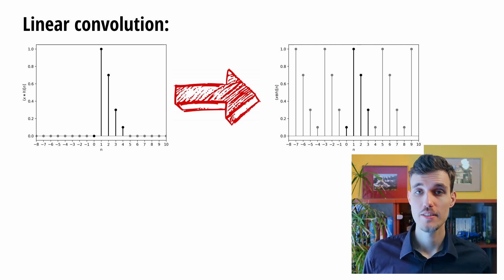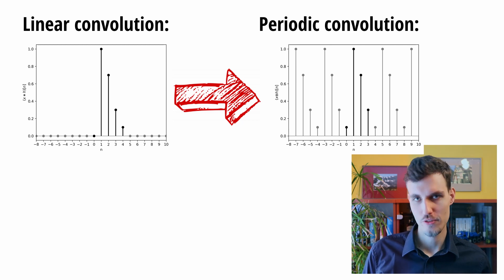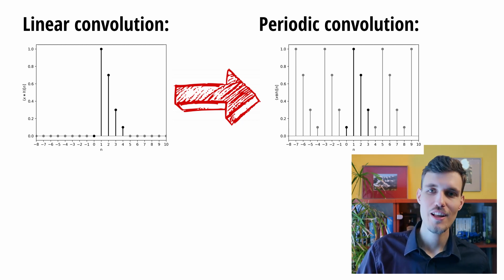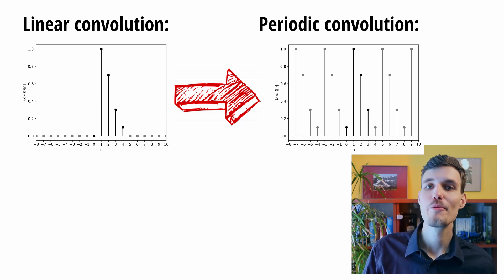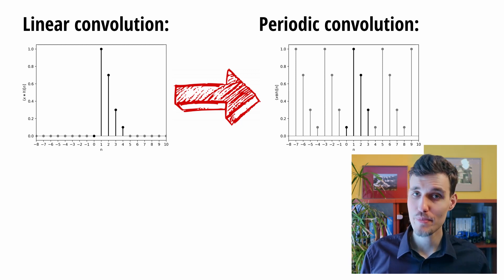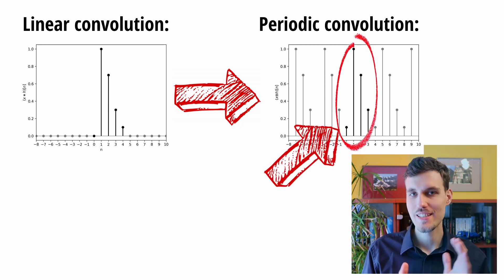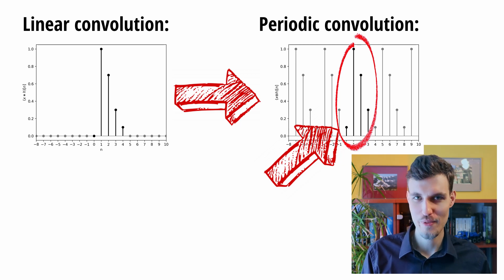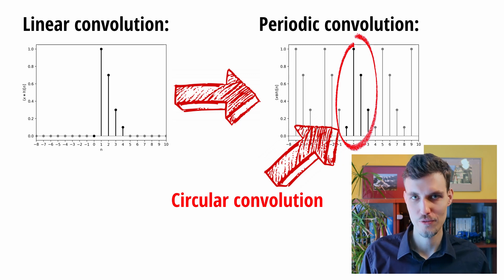The result is a superposition of the linear convolutions of x and h shifted by the multiplicity of four samples. This result is called a periodic convolution because the underlying signals are periodic because of the usage of the discrete Fourier transform. A subset of the periodic convolution which has the same length as the discrete Fourier transform length is called exactly the circular convolution.